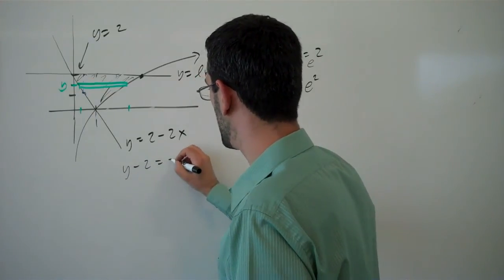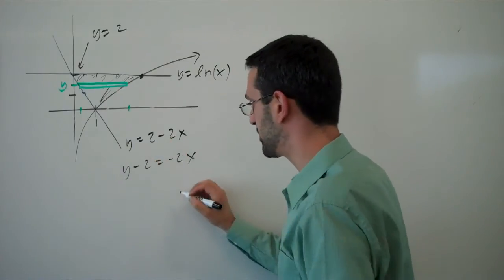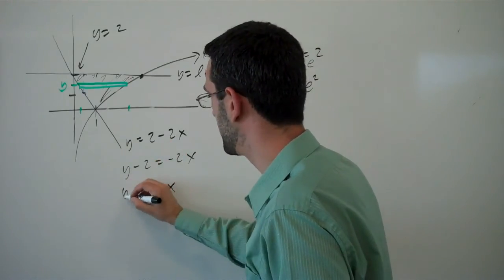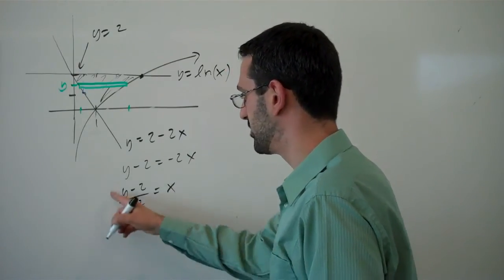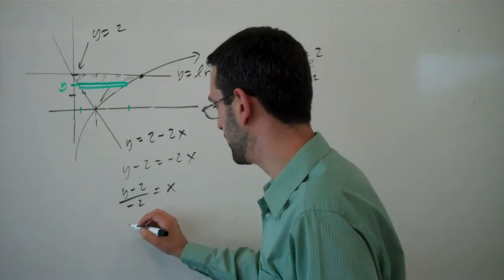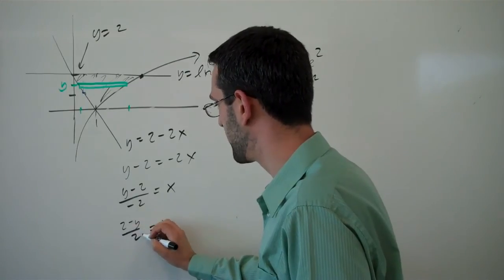y minus 2 would equal negative 2x. Moving the 2 over, dividing by negative 2. y minus 2 over negative 2. Or we could multiply the top and the bottom by a negative 1 and get 2 minus y over 2.